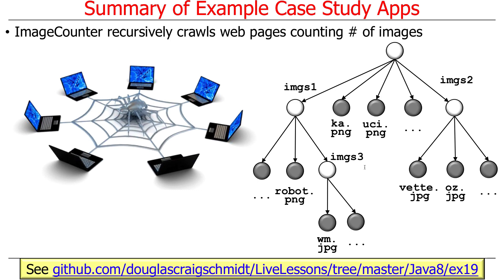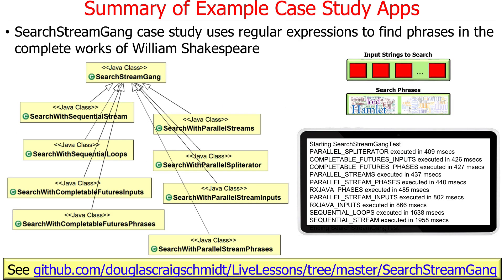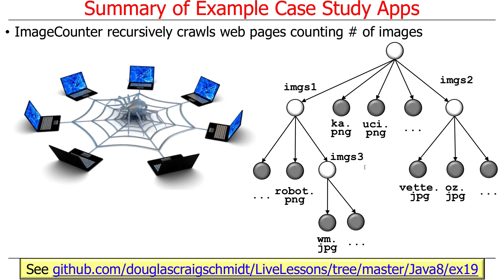You'll also see completable futures and an RxJava implementation in that comparison. There's also a web crawler example that shows how to use completable futures in a powerful way. It crawls the web starting from a URL, counts images on each page, and recursively follows links to find all reachable images. The source code is a great illustration of the concepts we'll cover in more detail later.